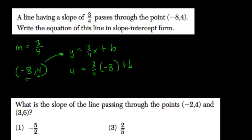3 fourths times negative 8, negative 8 over 4, that's negative 2, right? Negative 2 times 3 is negative 6, plus b equals 4.